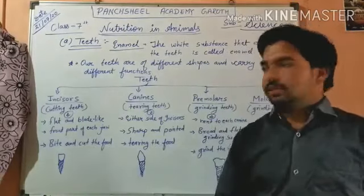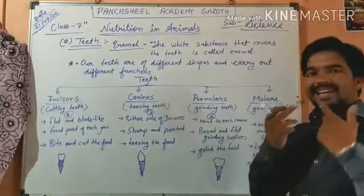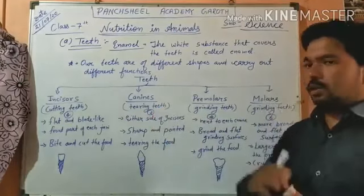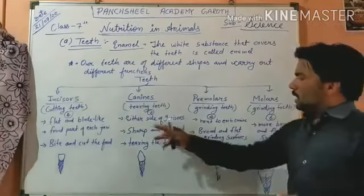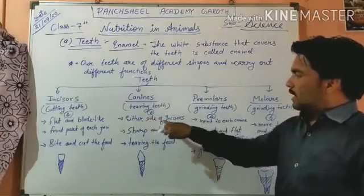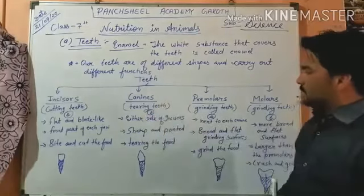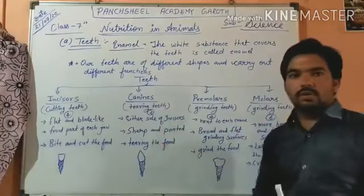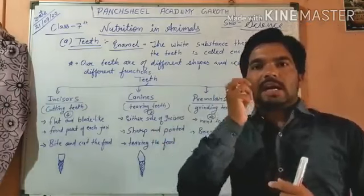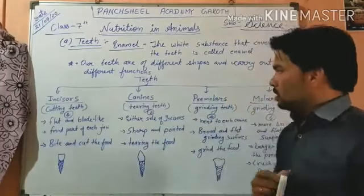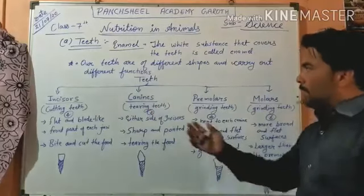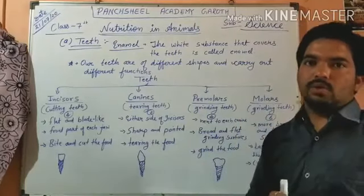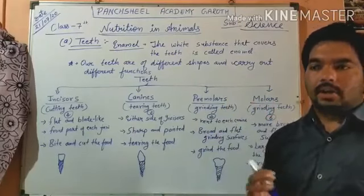After incisors there are canines — these are tearing teeth. There are two canines in the upper jaw and two in the lower jaw, placed on either side of the incisors. They are sharp and pointed and are used for tearing food. When eating an apple, for example, we take a side bite using our canines. In flesh-eating animals, canines are bigger because they tear live animals and bones.